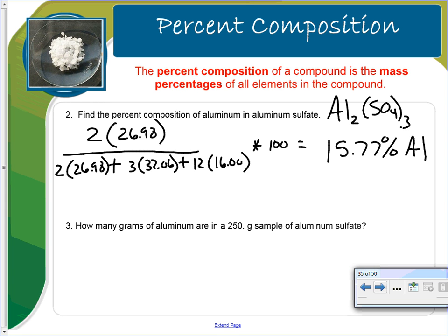Now the next question says, how many grams of aluminum are in 250 grams of aluminum sulfate? Since we know the percent of aluminum in aluminum sulfate, we'll just take that 15.77, which since it's a percent, we know that means 15.77 over 100, which ends up being 0.1577. That's just extra, just in case you forgot the math.